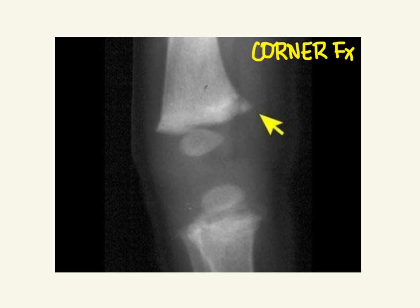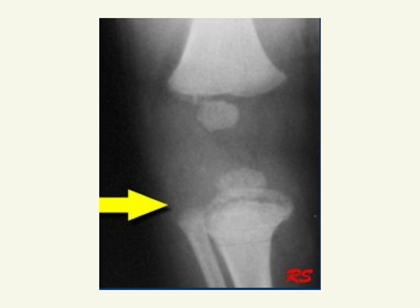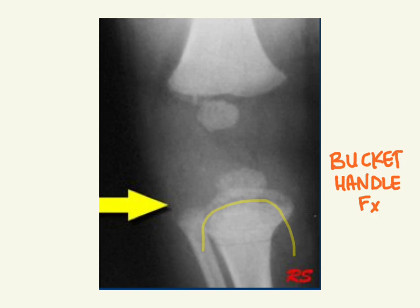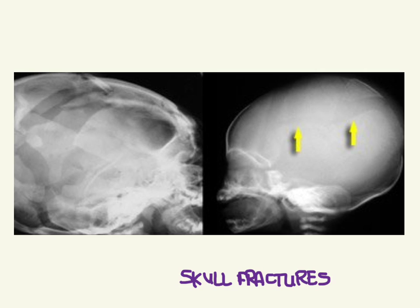Here we have the bucket handle fracture. The mechanism is similar to that of a corner fracture, and since both legs are usually involved they're typically bilateral. You'll see them commonly in the tibia, the distal femur, and the proximal humerus.